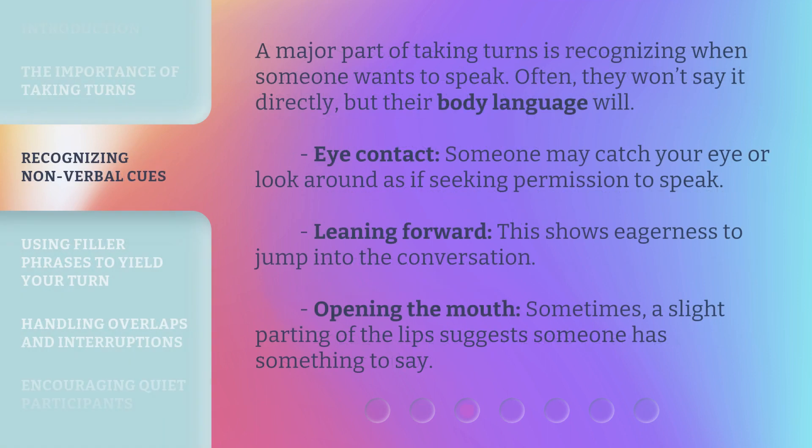A major part of taking turns is recognizing when someone wants to speak. Often, they won't say it directly, but their body language will. Eye contact: someone may catch your eye or look around as if seeking permission to speak. Leaning forward: this shows eagerness to jump into the conversation. Opening the mouth: sometimes a slight parting of the lips suggests someone has something to say.